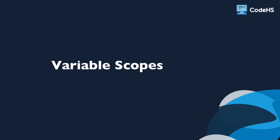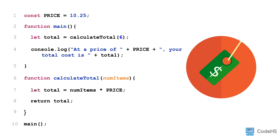In this lesson, you'll learn more about variable scopes. In this program, we use the const variable called price to determine the total value based on the number of items purchased. Because price is a constant, and we want to be able to access it throughout the program, we have declared it at the top of our program outside of a function. This enables us to access price in the main function and the calculateTotal function.